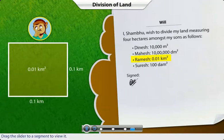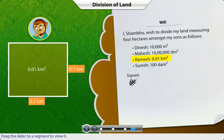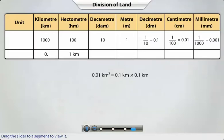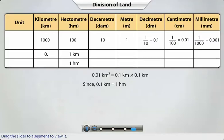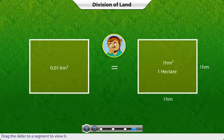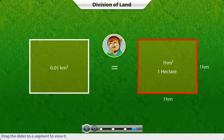Ramesh gets an area of point zero one square kilometers. If the plot is square shaped, the sides of the plot are point one kilometer each. Since point one kilometer is equal to one hectometer, the area of the land will be one square hectometer, or one hectare. Thus, Ramesh too gets one hectare of land.